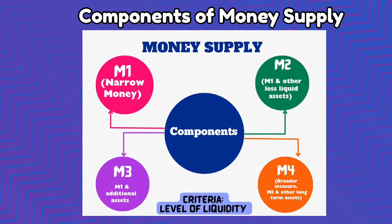Now let us look at the components of money supply. Money supply is typically categorized into different components based on their liquidity and accessibility. M1 represents the most liquid form. M2 includes near money like small time deposits. M3 and M4 include broader measures and less liquid components. M1 and M2 are known as narrow money, while M3 and M4 are known as broad money. These measures are in decreasing order of liquidity — M1 is the most liquid and easiest for transactions, whereas M4 is the least liquid of all.